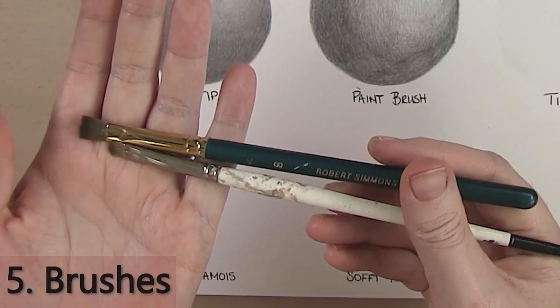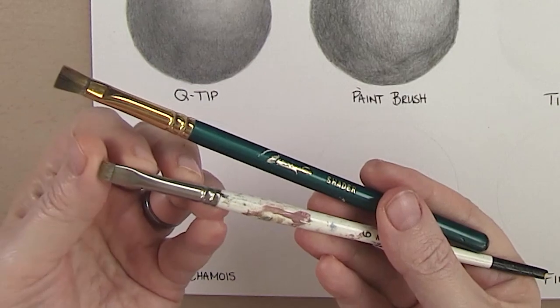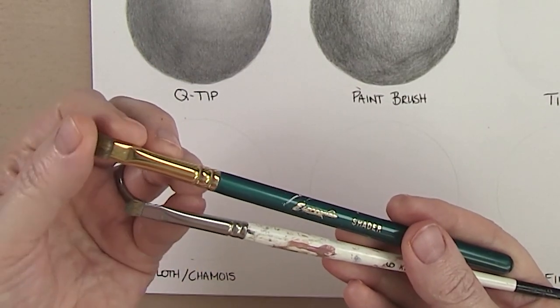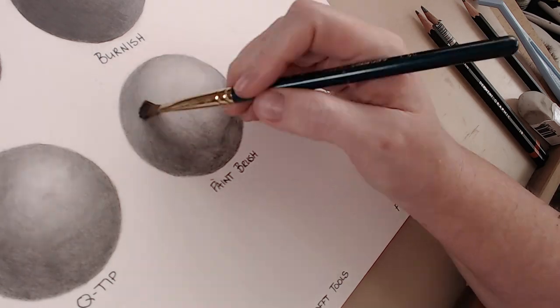The fifth method is using a paintbrush or makeup brush. You can use round, filbert, or shader. I typically use the shader or filbert for this. Just work in circular motions to blend the graphite out.